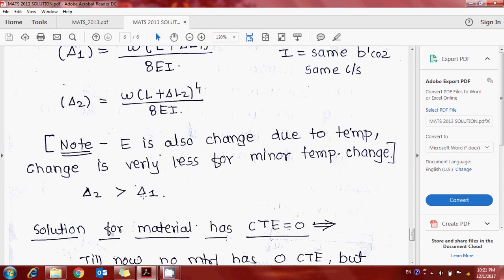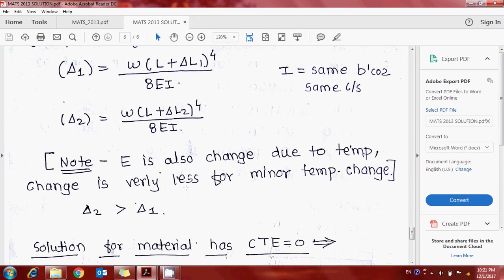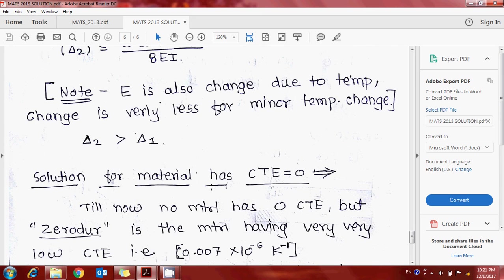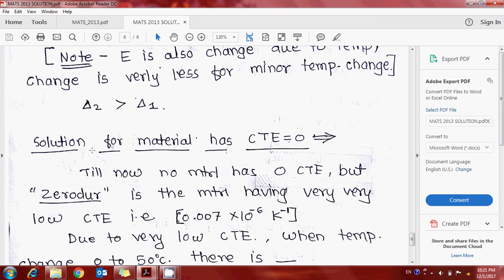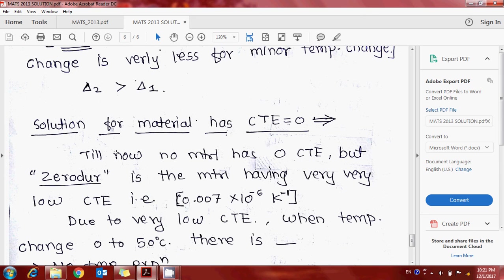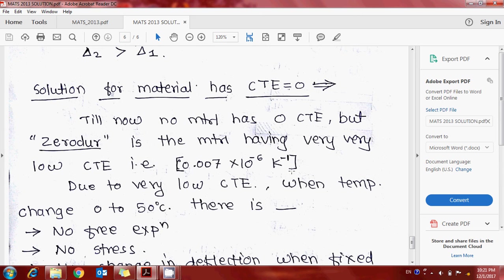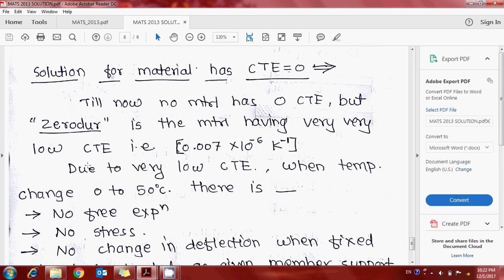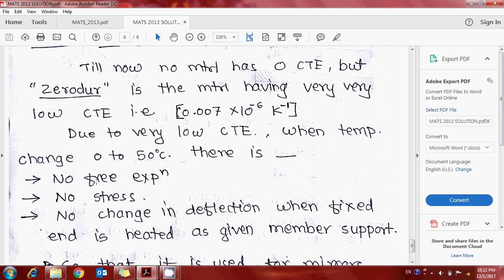So at x equals L, deflection in case one is w times (L plus delta L1) raised to 4, divided by 8EI. Here, moment of inertia I is the same because of the same cross-section area throughout the length. Important: E also changes due to temperature, but this change is very less for minor temperature change.